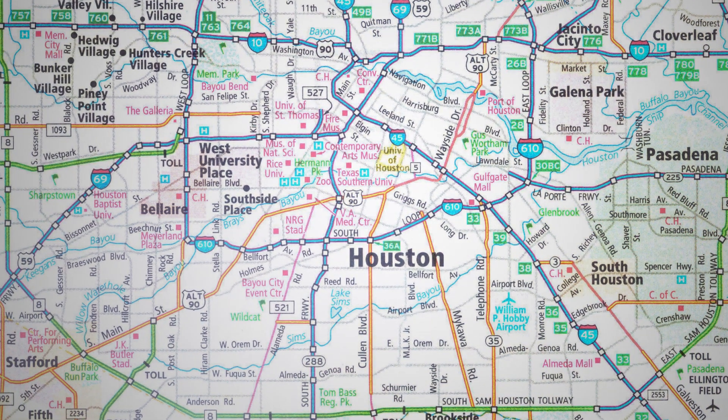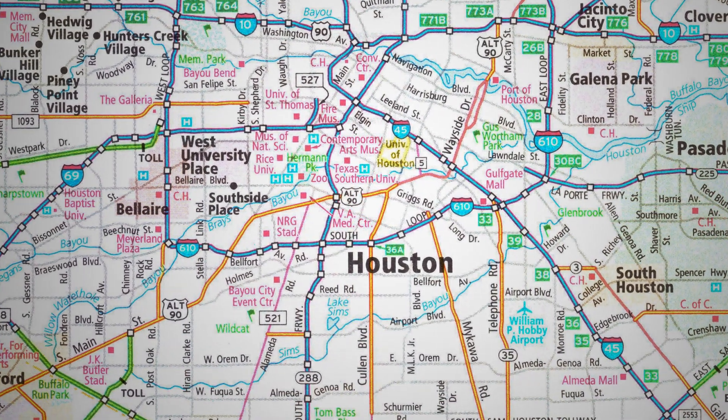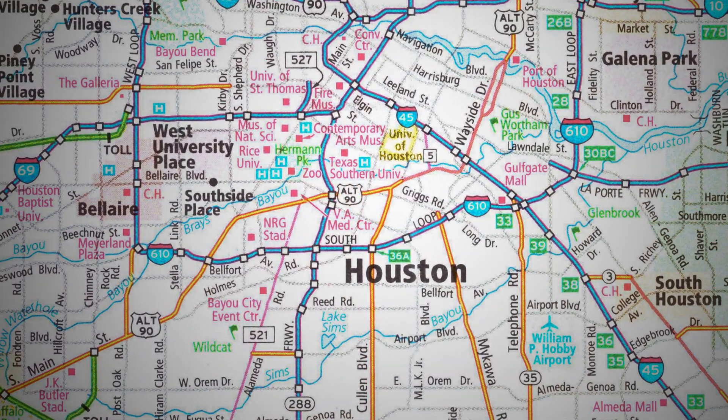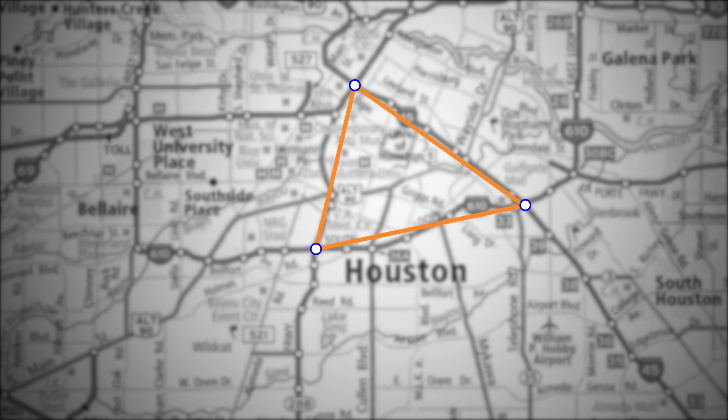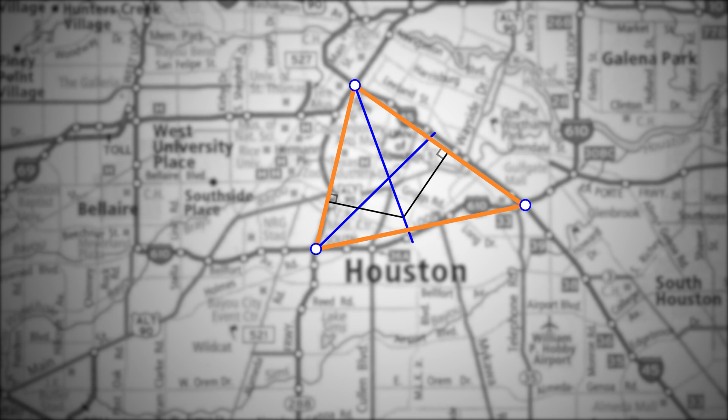Now consider this problem. Suppose a developer wants to build a new shopping center that is the same perpendicular distance from all three of these roadways. Any point along this angle bisector is the same perpendicular distance away from these two sides. Similarly, any point along this angle bisector is the same perpendicular distance away from these two sides, and any point along this angle bisector is the same perpendicular distance away from these two sides.